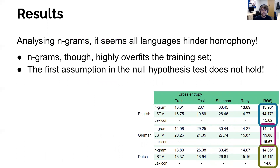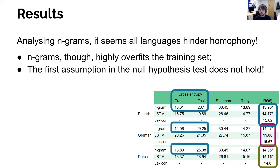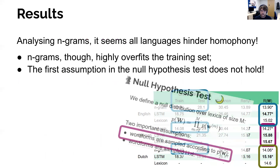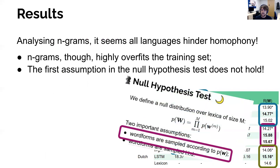If we analyze the N-gram Rényi entropy and run the hypothesis test on top of the N-grams, we see that all languages hinder homophony. However, the N-grams highly overfit the training set, with much lower cross-entropies on the training set than on the test set. This means that the first assumption in the hypothesis test — that word forms are sampled according to P(w) — does not hold if we take P(w) to be the N-grams.